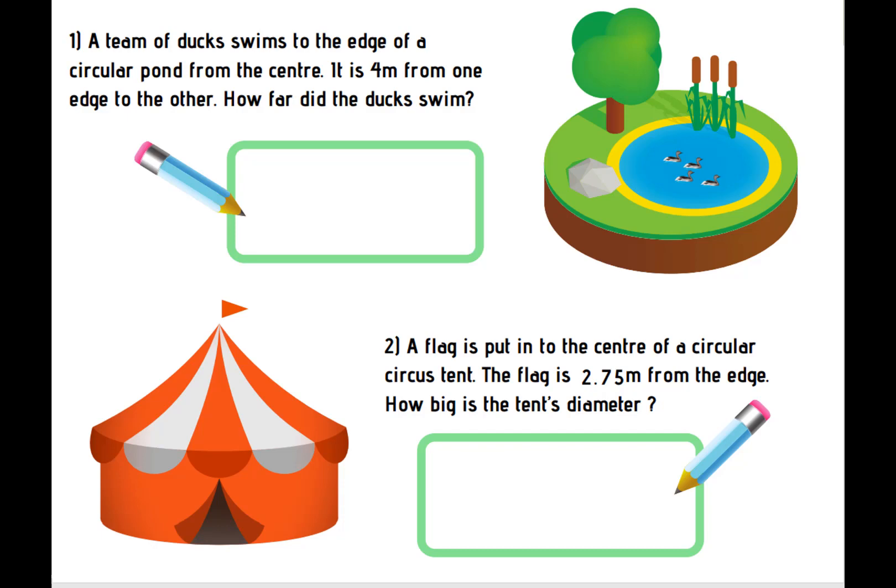A team of ducks swims to the edge of a circular pond from the centre. It's 4 metres from one edge to the other. How far did the ducks swim? So if we highlight our important information, they swim to the edge of a circle from the centre. And it's 4 metres from one edge to the other. So what part of the circle do we have? If we have swum from the middle of a circular pond from the centre, what part is that? So even though this picture isn't a perfect circle on the side, they're swimming from the centre to the edge.